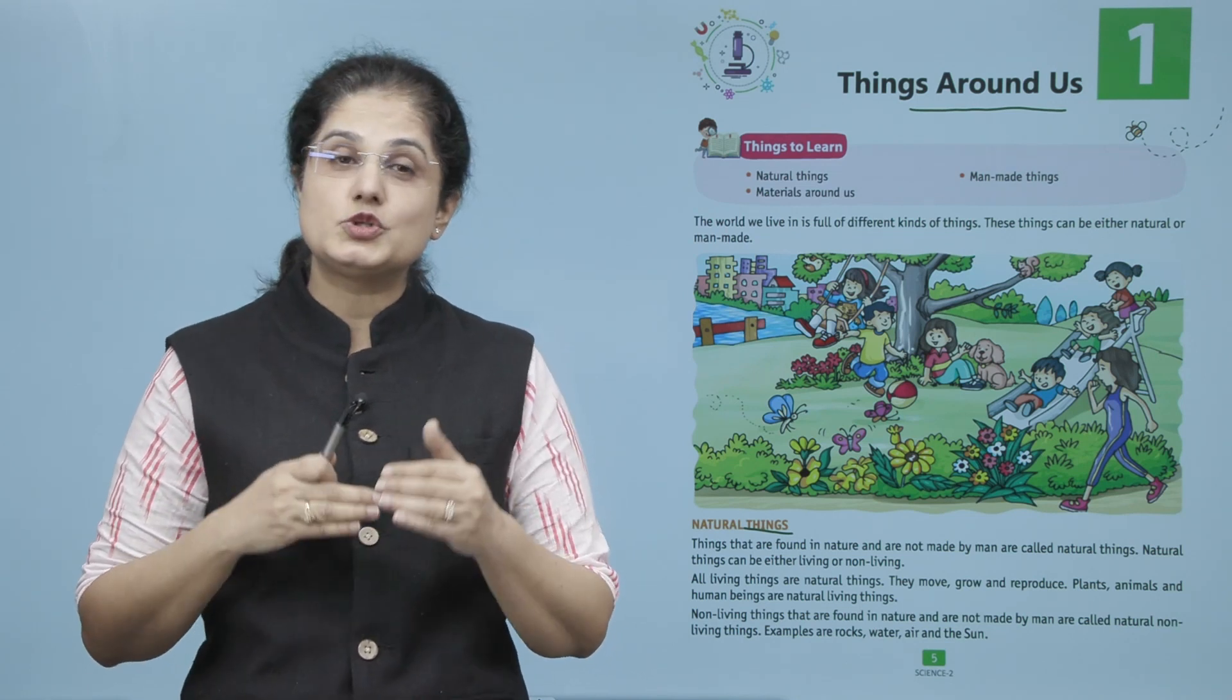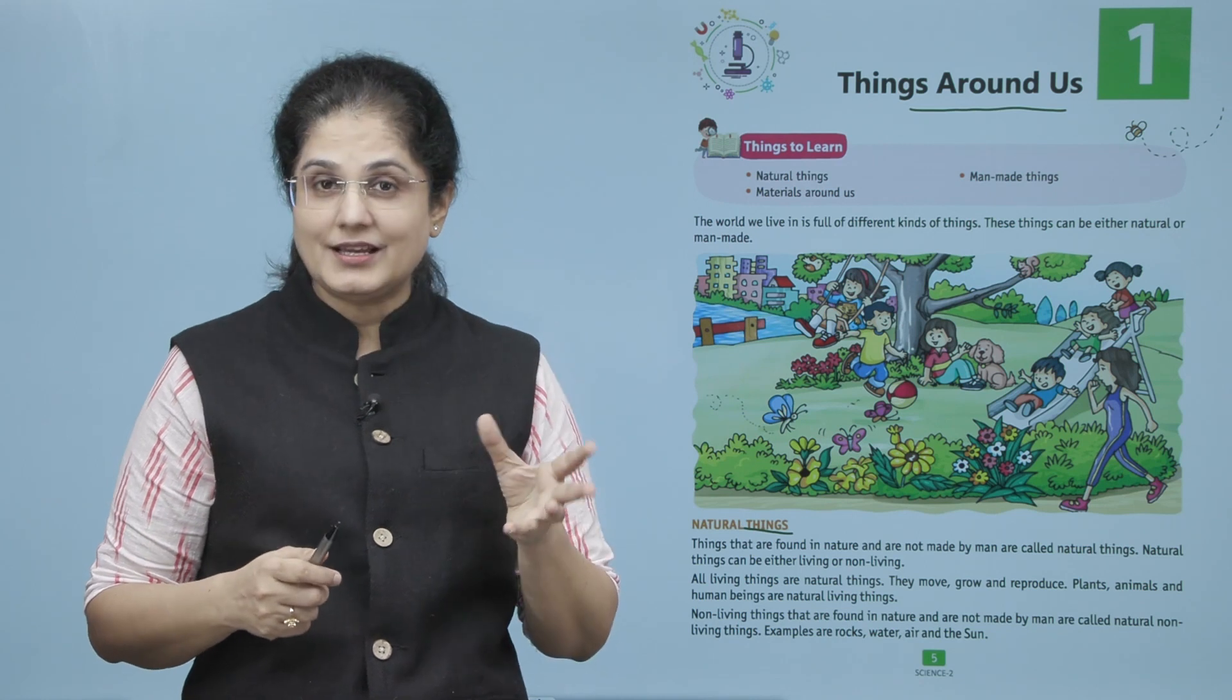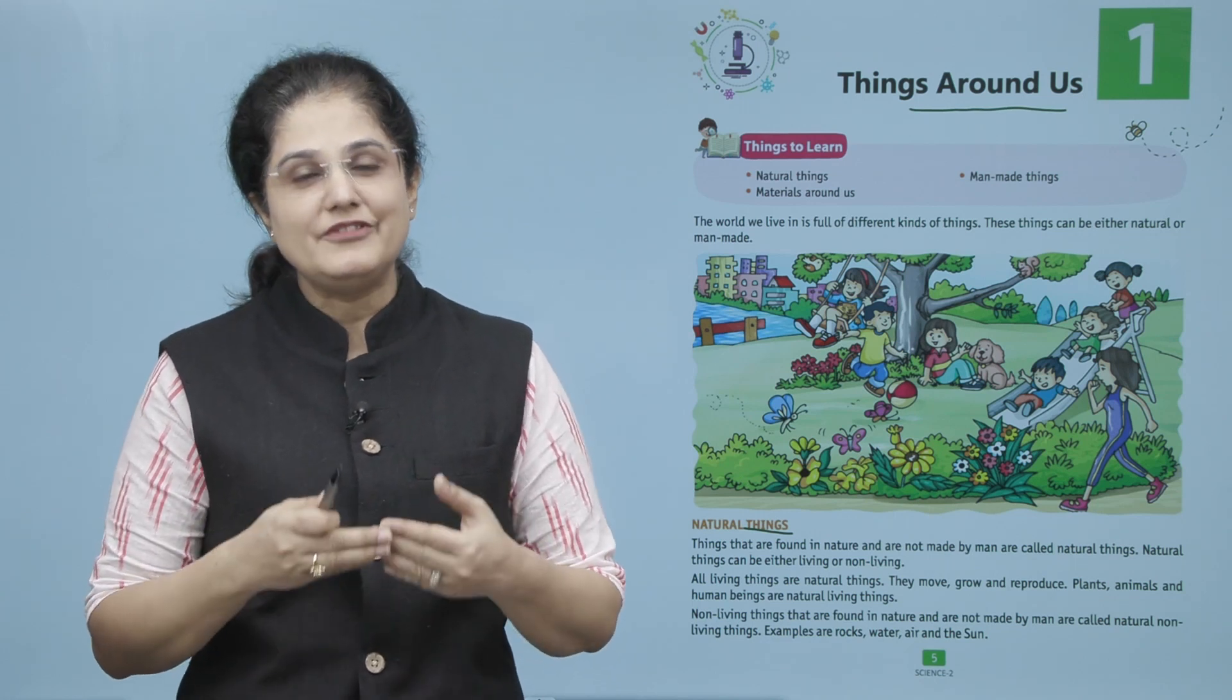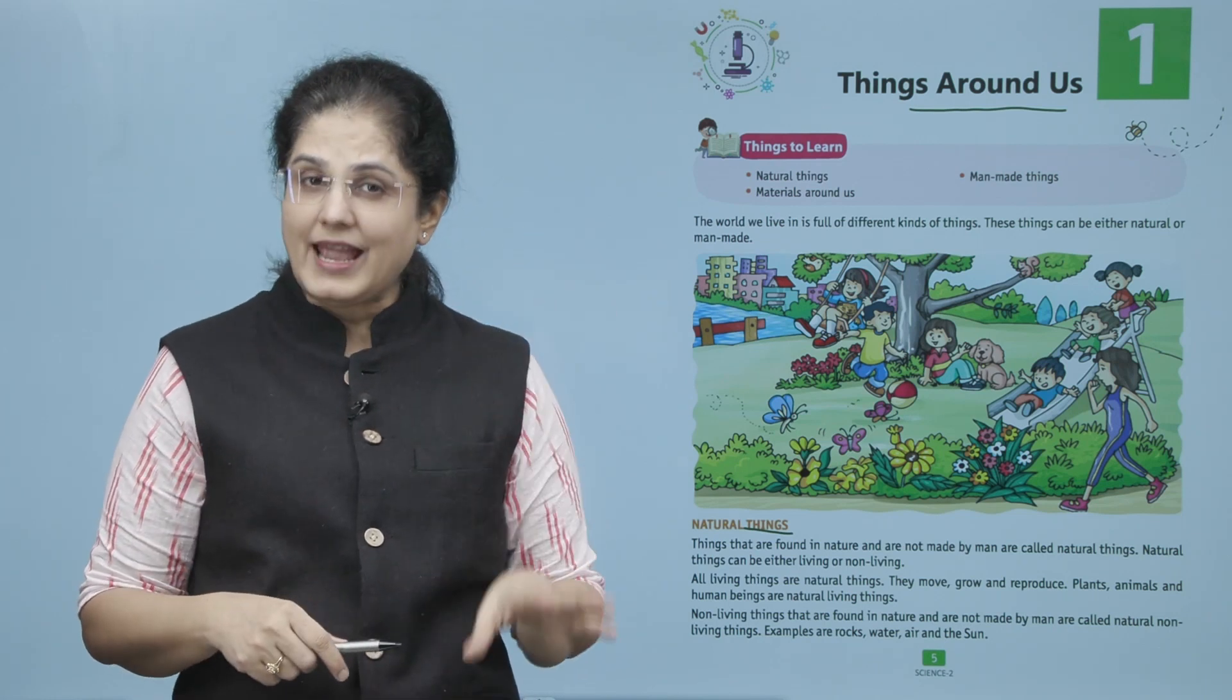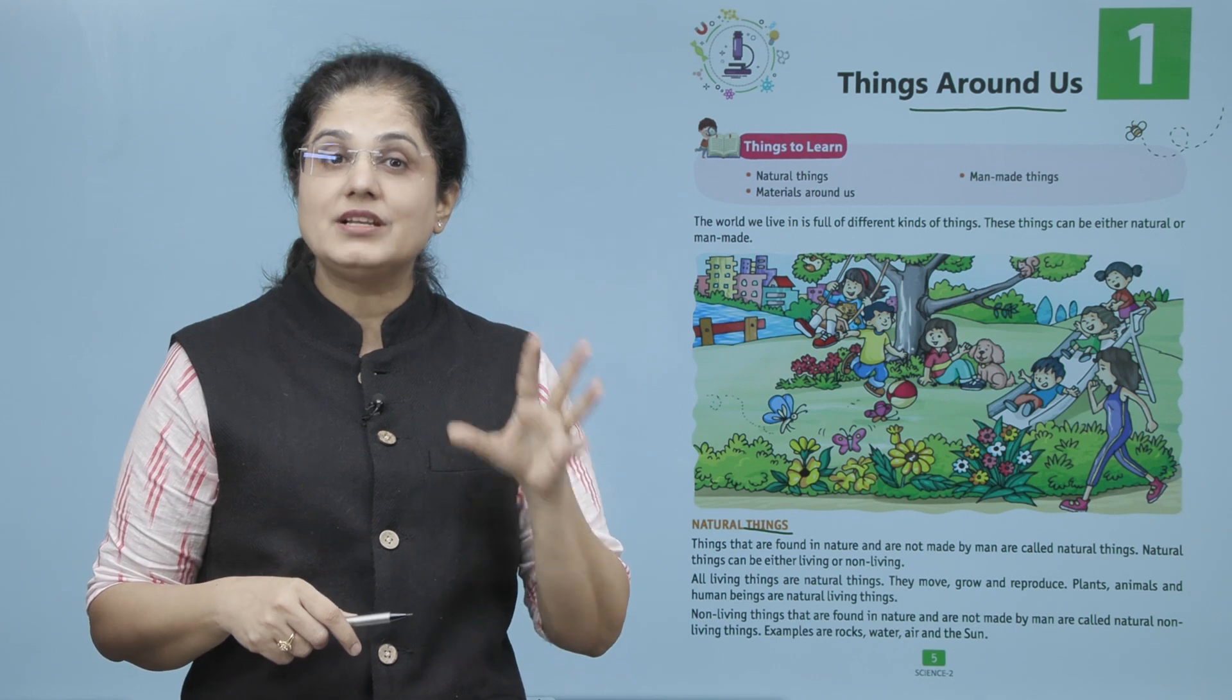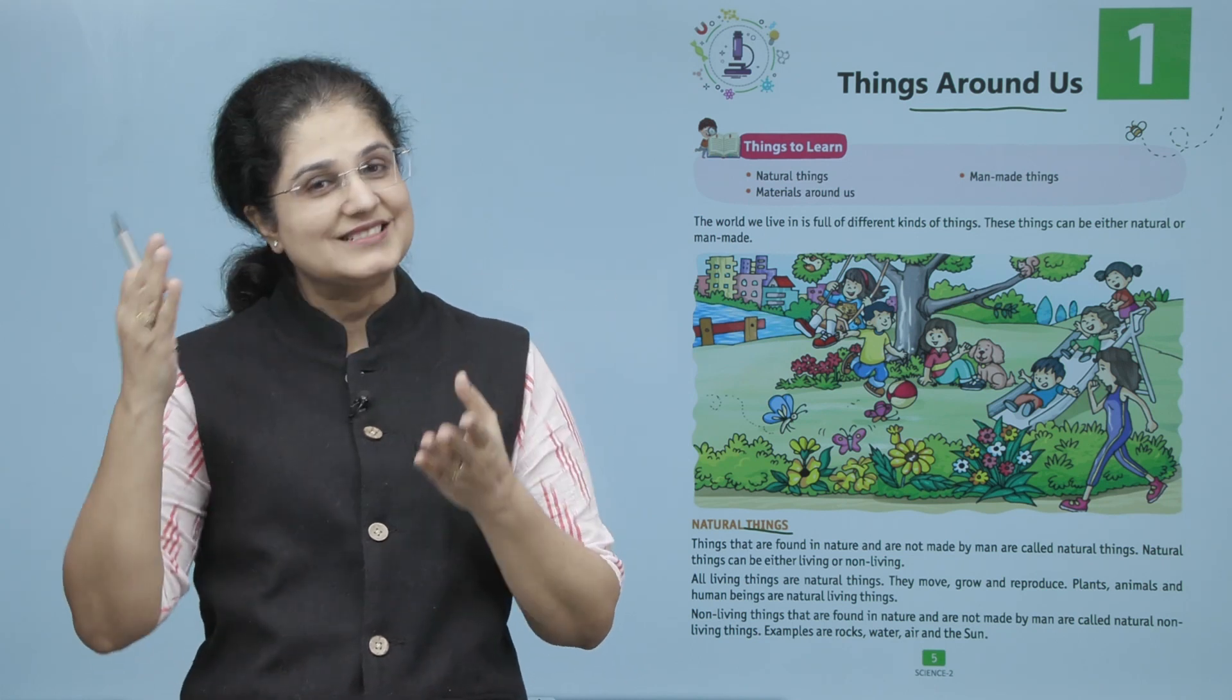Jitni living cheeze hain, unme life hoti hai. Aur jo natural non-living things hain, yeh aise cheeze jo nature mein milti hain lekin jinme life nahi hai, unhe kaha jata hai non-living things. So natural non-living things ke examples kya hain, jaise ki pathar, pani, hava, sun.